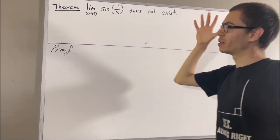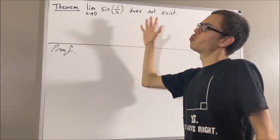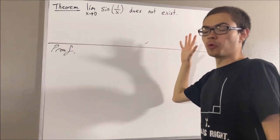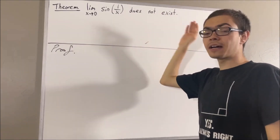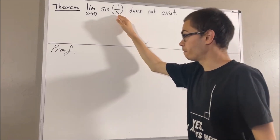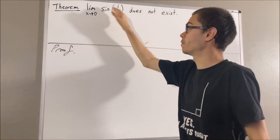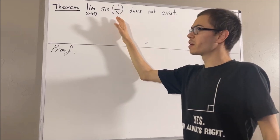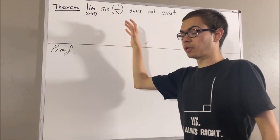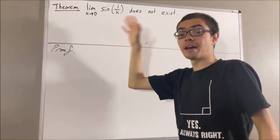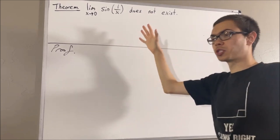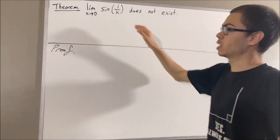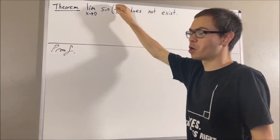We're dealing with the limit of a function. We can take any non-zero real number x and perform sine of 1 over x. So we're going to say that the function we're dealing with is the function f from the non-zero real numbers to the real numbers, defined by f of x equals sine of 1 over x.